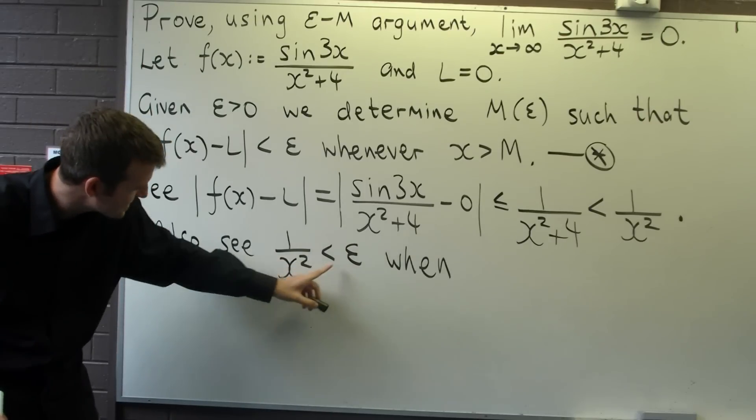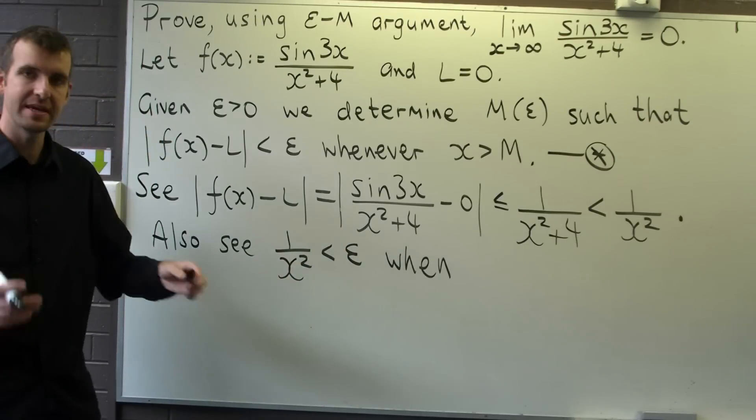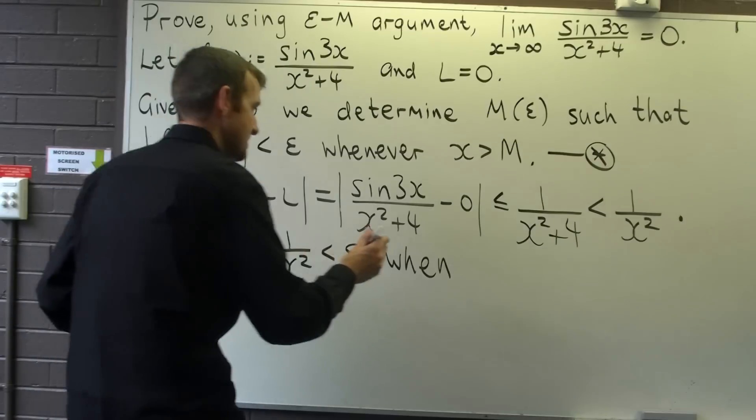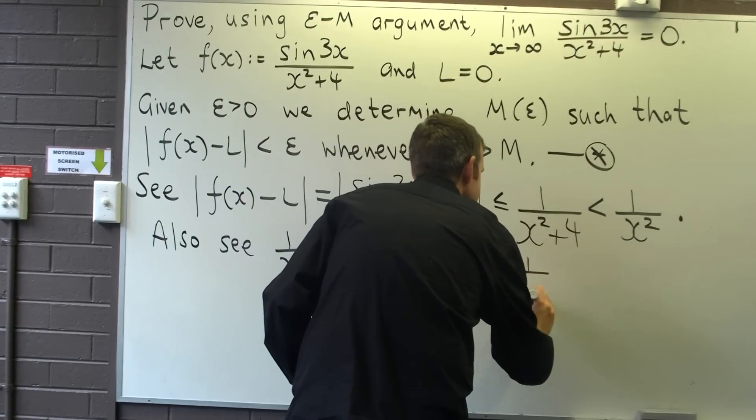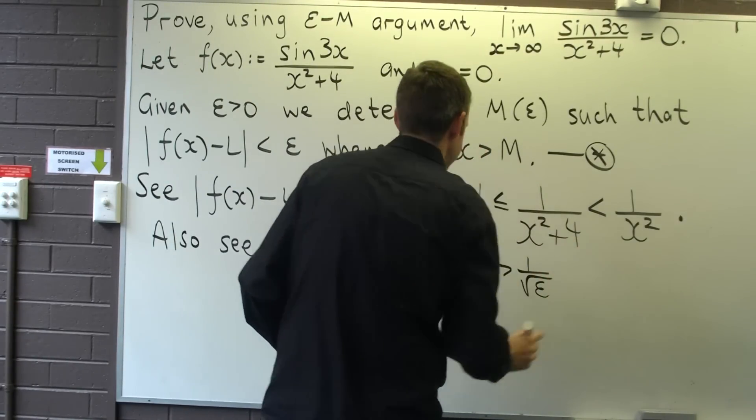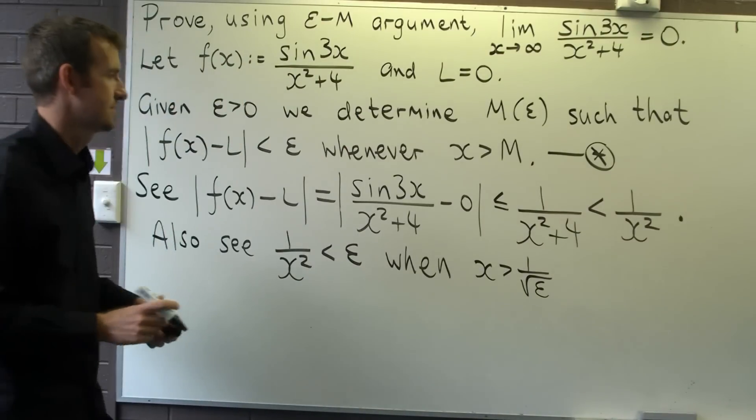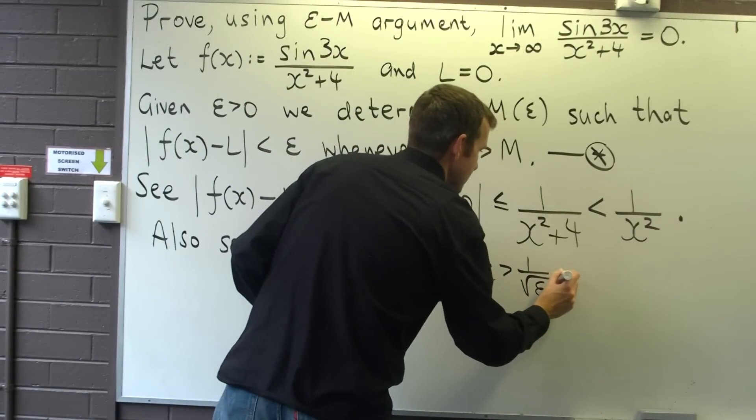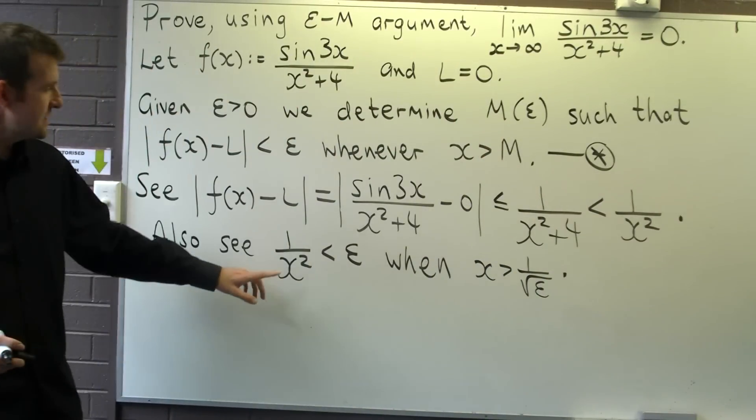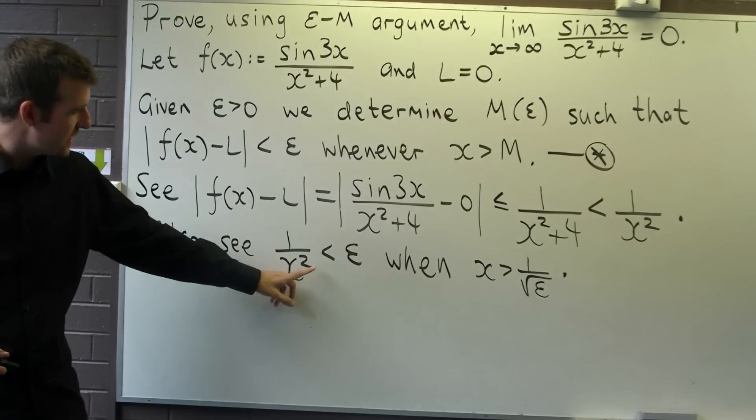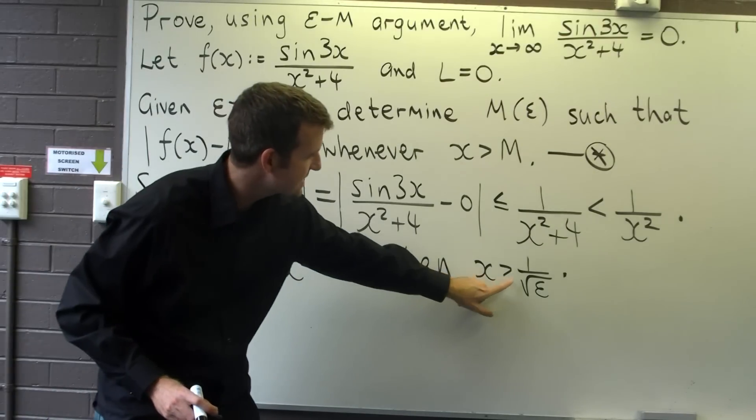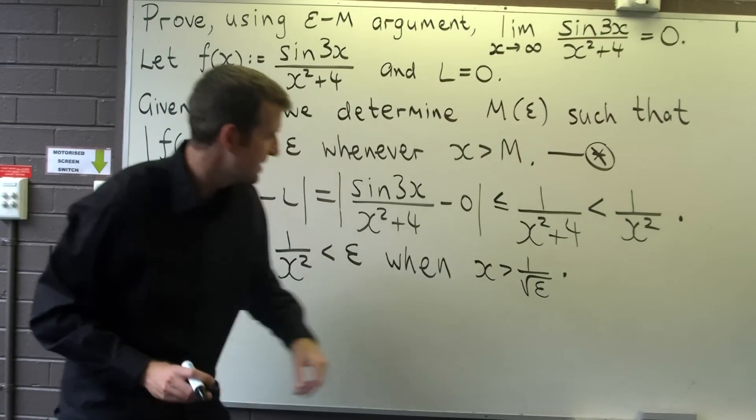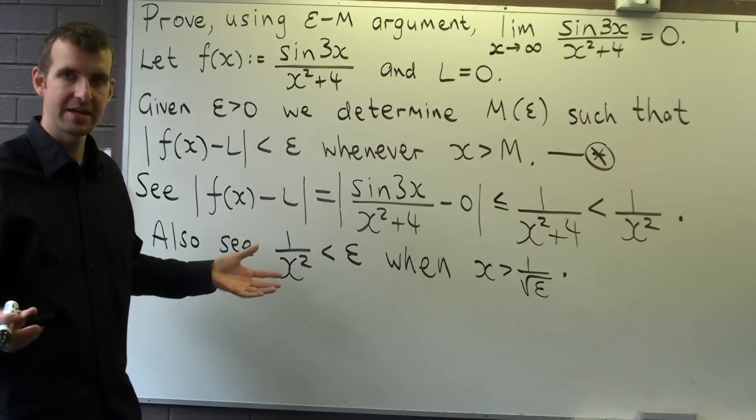Well, if I just rearrange it, bring the x² up there, the epsilon down there, and take the square roots, I get this. Okay, so I know that 1/x² is less than any given number epsilon when x is larger than 1/√ε.